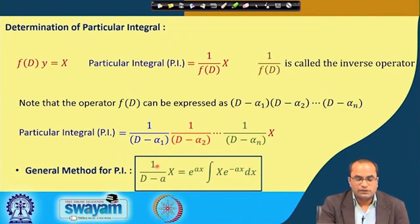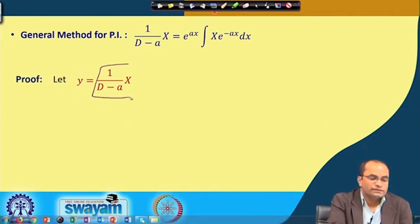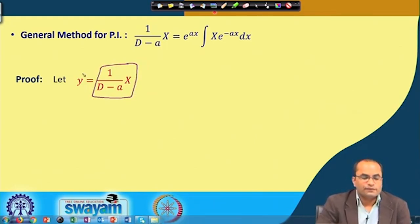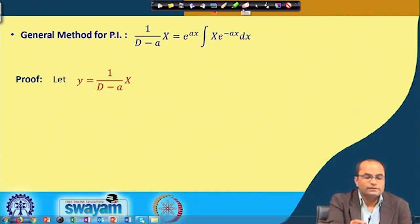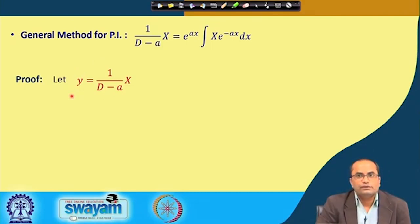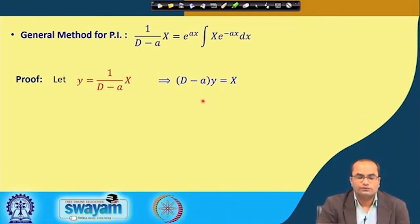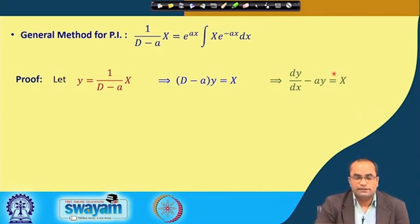To see how this result comes in terms of an integral, let y = (1/(D−a))X. To find y, we multiply this equation by the operator (D−a), which gives (D−a)y = X. This is a first-order differential equation that we know how to solve — indeed, it is a linear equation: dy/dx − ay = X.